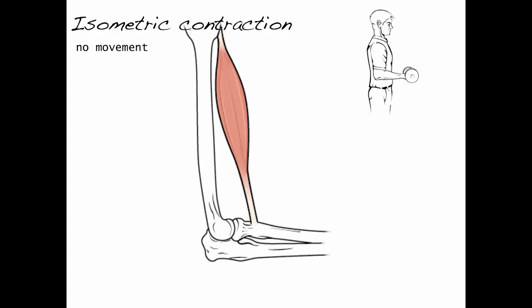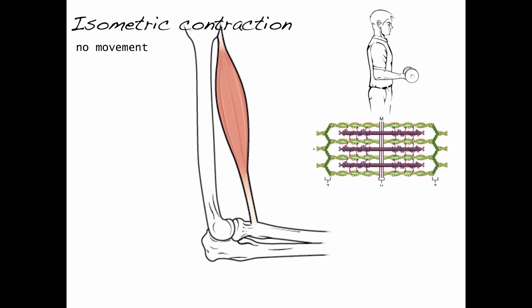And finally, an isometric contraction is one in which the muscle does not move. And therefore, the sarcomere has no movement.